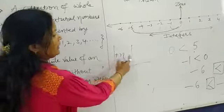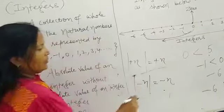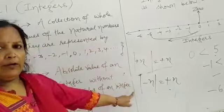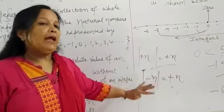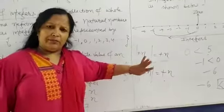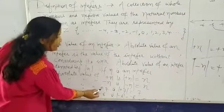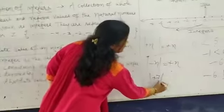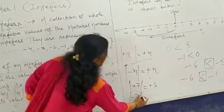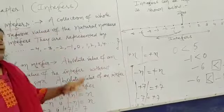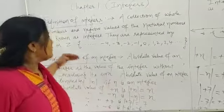The absolute value of a positive integer will be a positive integer. The absolute value of a negative integer will also be a positive integer — it remains positive all the time. For example, the absolute value of plus 7 is plus 7. The absolute value of minus 7 is plus 7. This means the absolute value of an integer is the value of the integer without considering its sign. This is called absolute value.